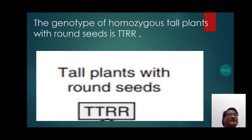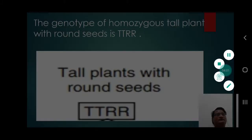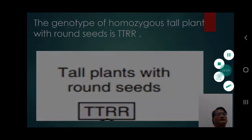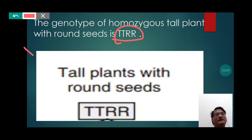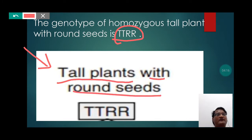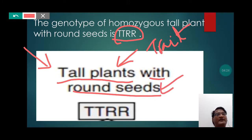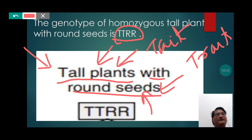The genotype of homozygous tall plants with round seeds is capital T, capital T, capital R, capital R. Here we can understand it with the help of this picture where it shows tall plants with round seeds — the first trait being the height and the second trait being the shape of the seed, represented by TTRR.